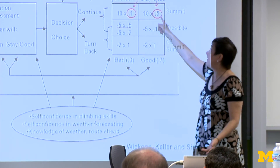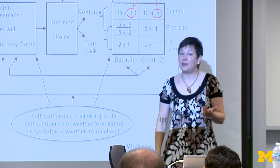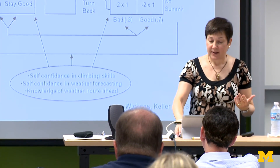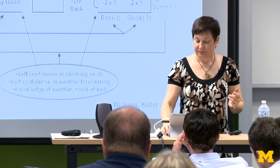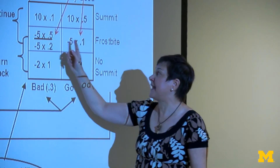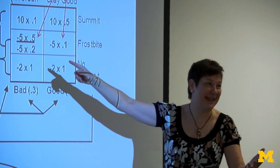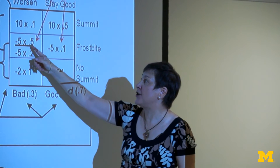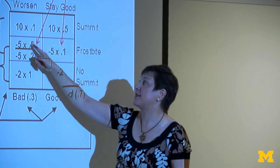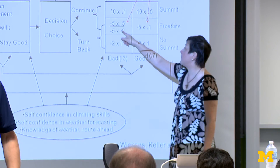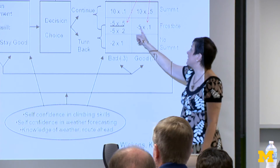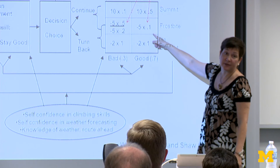The probability of reaching the summit gets combined with the value you attach to summiting — say, a positive ten. You can do the same for frostbite: not a pleasant outcome, so negative five. If you continue and the weather gets worse, there's a higher probability of frostbite than if you turn back. And if the weather stays good, the likelihood of frostbite is lower.